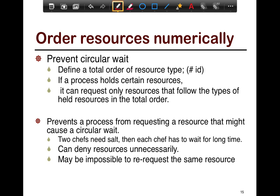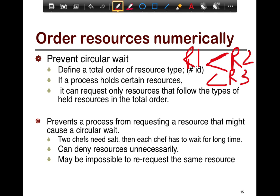Circular wait can be prevented by ordering resources numerically. You define a total order of resource types — if you have a relation 'less than,' it is defined on each resource in the system, so resource one is strictly less than resource two, strictly less than resource three. You give them an ID and order them. If a process holds certain resources, it can only request resources that follow those held resources in the total order.